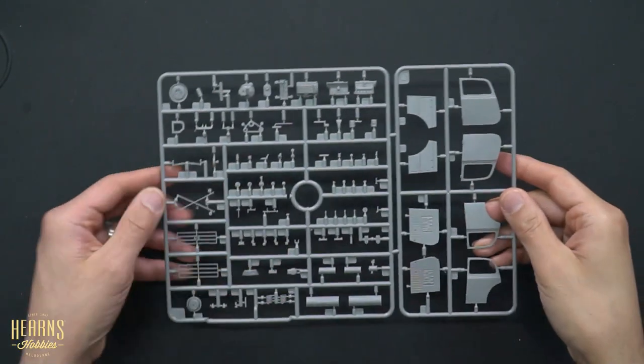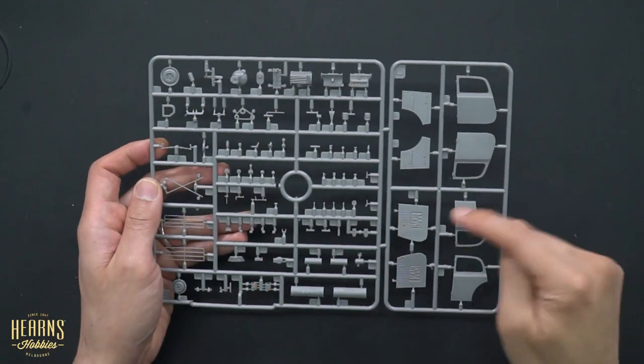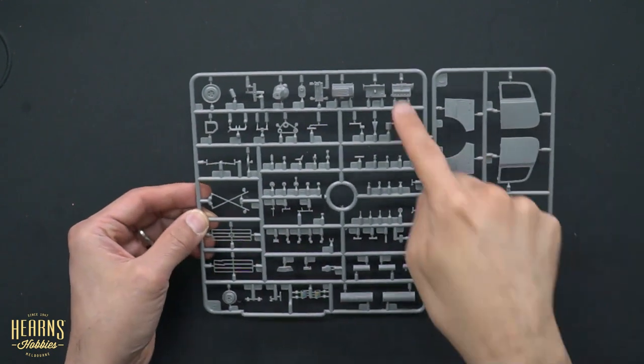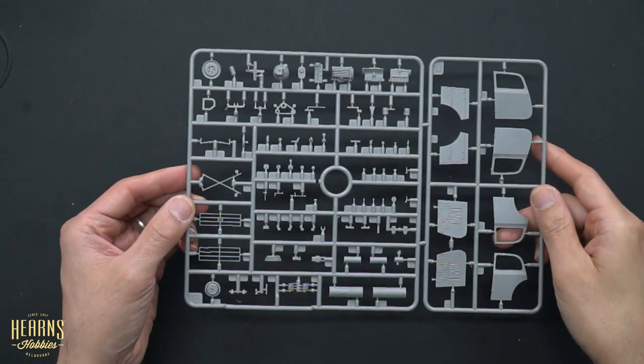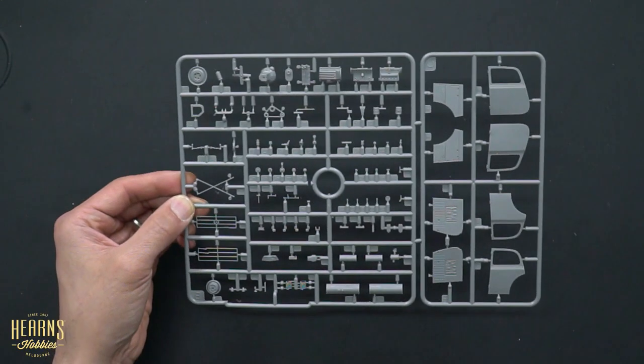Then we have this large sprue. This has got the doors, the inner panels there for the doors as well. And then this is all engine detail, which is quite amazing.